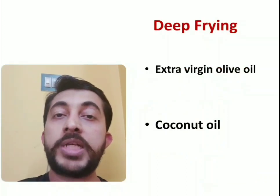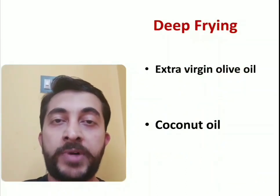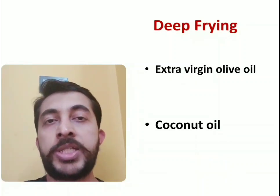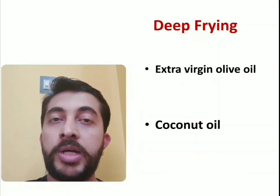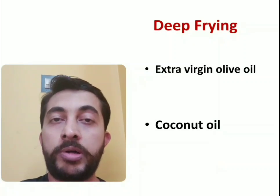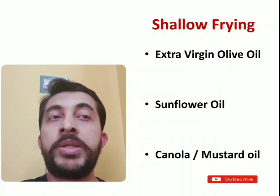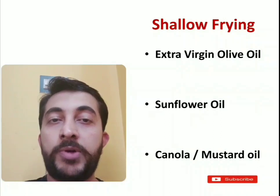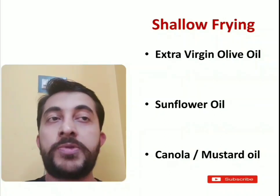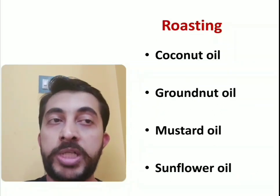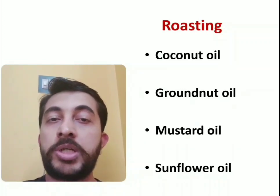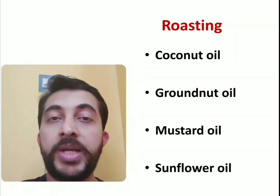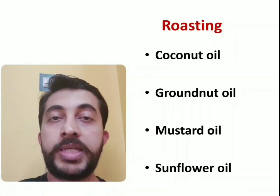Which oils are better for various cooking purposes? For deep frying, extra virgin olive oil or even coconut oil are good — coconut oil has good stability. For shallow frying, extra virgin olive oil, sunflower oil, canola oil, or mustard oil can be used. For roasting, coconut oil, groundnut oil, mustard oil, or sunflower oil can be used. So depending on your purpose, various oils can be used.